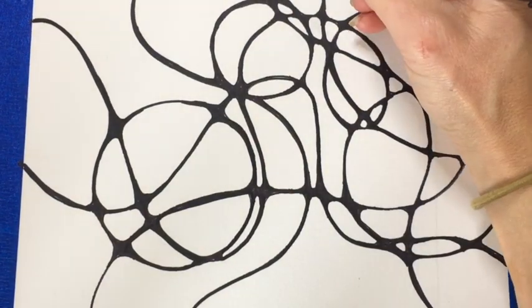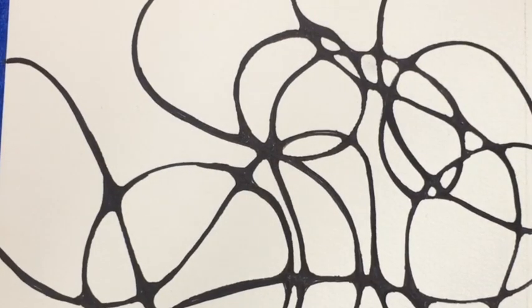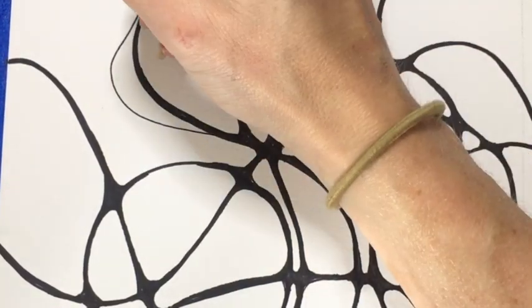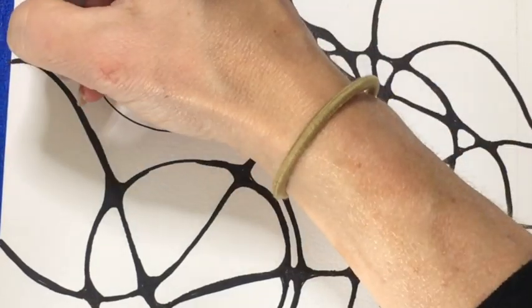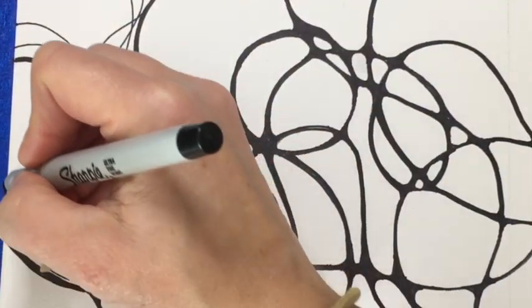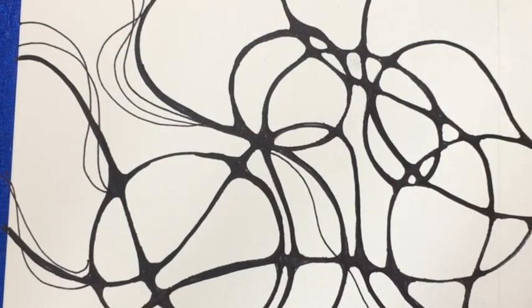What is happening is you are turning your drawing into a neurographic drawing. You are making these intersections and curves look like synopsis in your brain. That is just a little bit of science for you. You are going to keep rounding out every intersection so that you are okay with the craftsmanship that you have done.